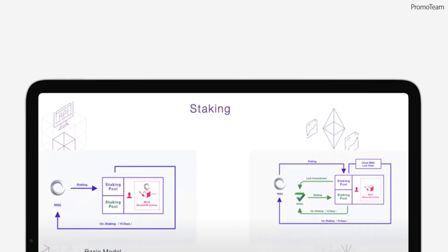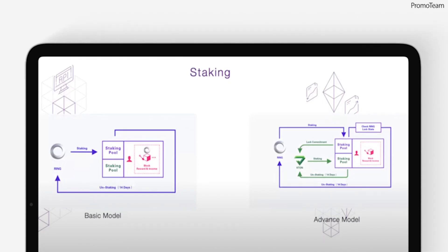In ParaChain mode, the original validators and staking mechanisms will be used to ensure local consensus within the Darwinia network, which will help achieve faster block confirmation and higher TPS, while the cross-chain security of the ParaChains will be guaranteed by the validators of the Polkadot Relay Chain.